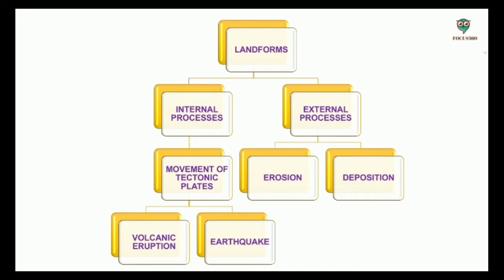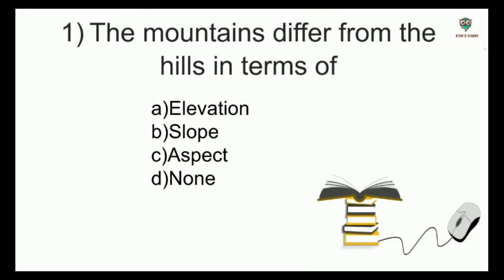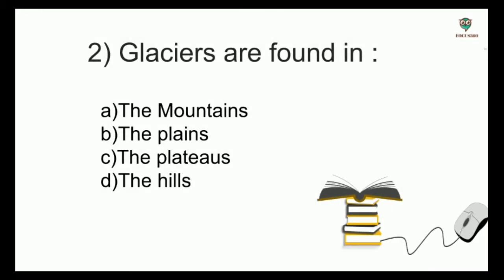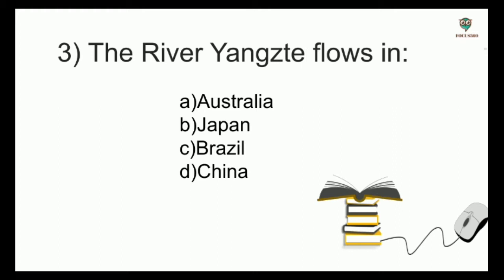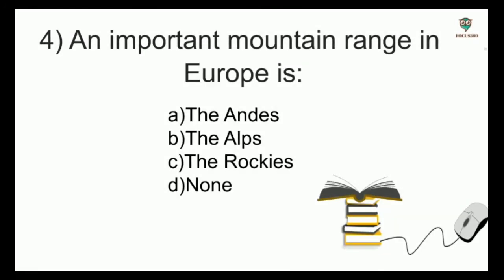The mountains differ from the hills in terms of — options: elevation, slope, aspect, none — and the answer is elevation. Next, glaciers are found in — options: mountains, the plains, the plateaus, the hills — and the answer is the mountains. Next, the river Yangtze flows in — options: Australia, Japan, Brazil, China — and the answer is China.